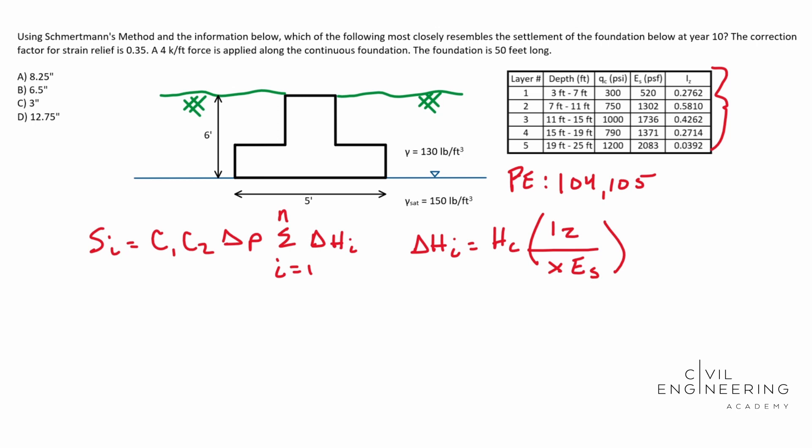Let's go off our knowns to start out with. We know that C1 is going to be 0.35. C2, let's go ahead and solve for that. It's going to be 1 minus 0.2 times the log base 10 of our time, which is 10 years, over 0.1. That ends up being 0.6. So now we know what C2 is, we know what C1 is. Let's solve for Delta P.